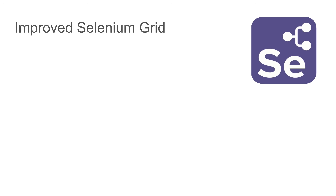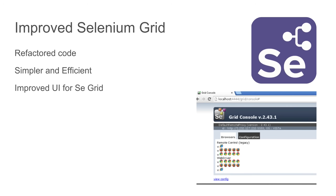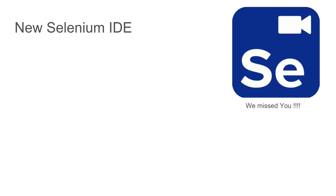The next big change is going to happen to Selenium Grid. We know Selenium Grid is something we can use to run our tests in parallel on multiple infrastructure. Now we will be having Selenium Grid with new and improved refactored code — simpler and more efficient — and a much improved UI. The current UI is not very good, so we will have a very good new UI, plus better support for Docker and Kubernetes.